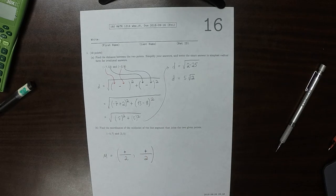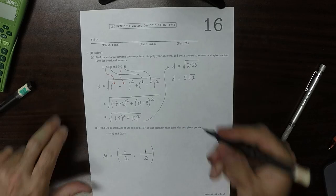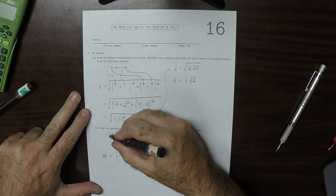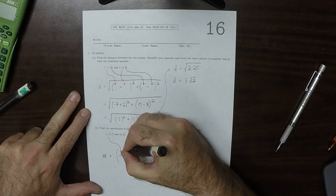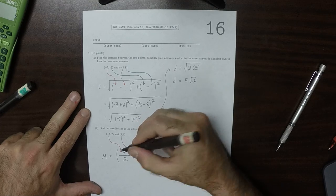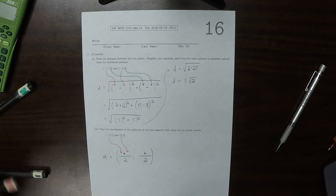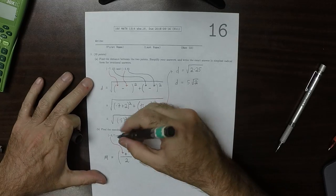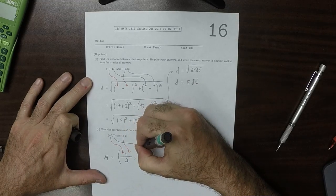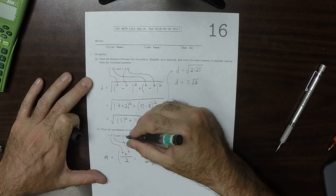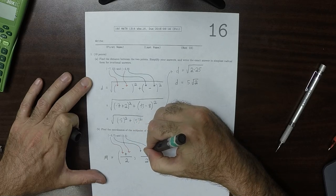It's the average of the x's and the average of the y's, so one x, another x, plus one y, another y.